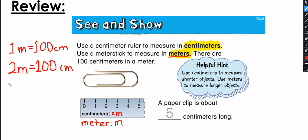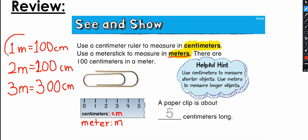Let's say you want to measure the length of a carpet in your room. It's a big carpet and it measures three meters. How much is three meters in centimeters? It will be 300 centimeters. This is a very important point: one meter equals 100 centimeters.